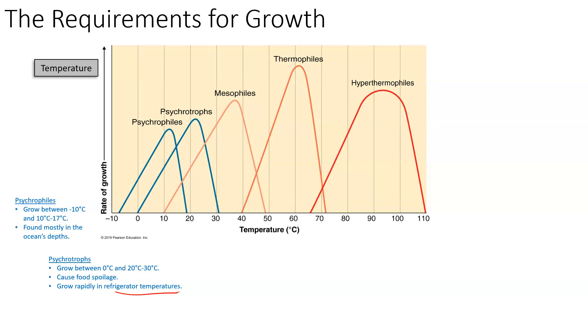Room temperature is about 27 degrees Celsius, and at room temperature these bacteria grow really fast as well. So if food sits out for a while, these are the bacteria causing that food to go bad.